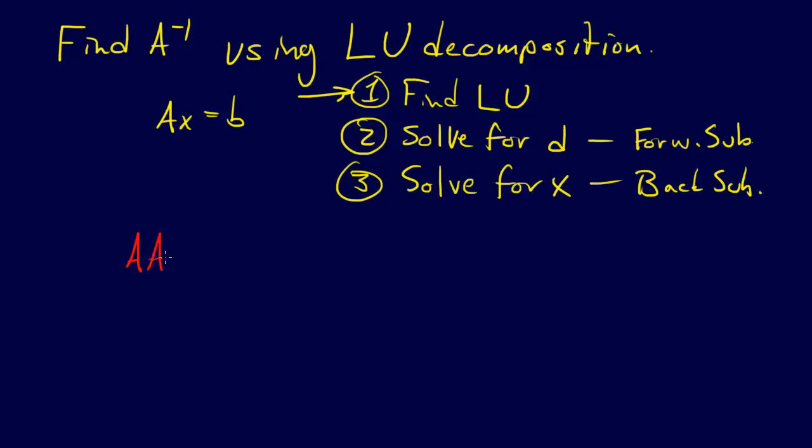So A, A inverse equals the identity matrix, right? Because that's the definition of the inverse. And I'm going to rewrite this equation. So what we're going to do is we're going to actually try to turn this into a problem sort of like that. And so if we have this A, A inverse equals I, I'm going to rewrite I. So I'm going to rewrite I as, I'm going to call that E1, E2, and E3.